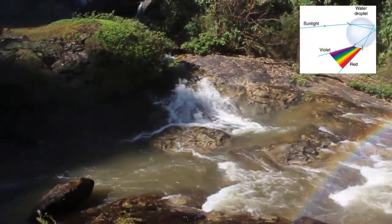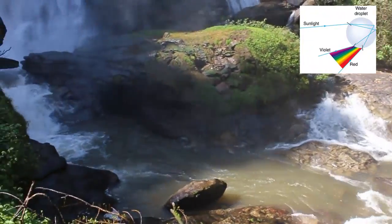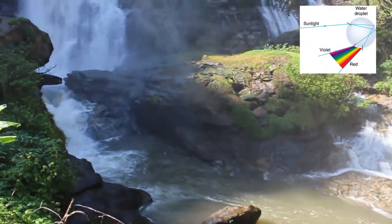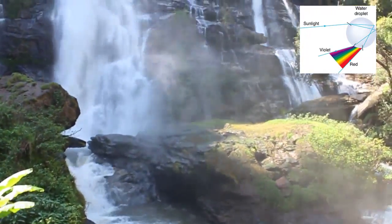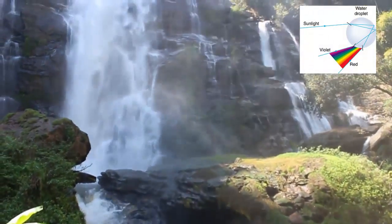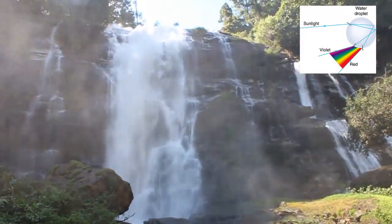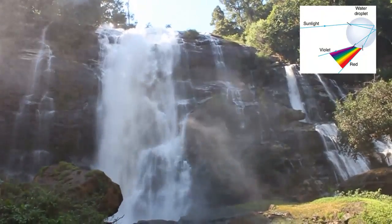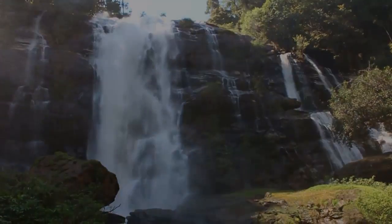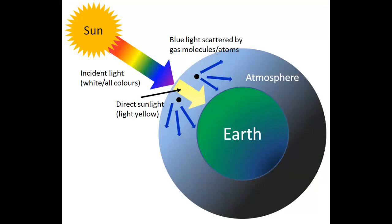Now let's compare the same phenomenon with a rainbow. When we have a very humid environment, a rainy season, or when we are near a waterfall with lots of water particles, we are sure enough to notice a rainbow. When sunlight passes through the dense medium of tiny water particles, a spectrum of colors is visible, which is called dispersion.